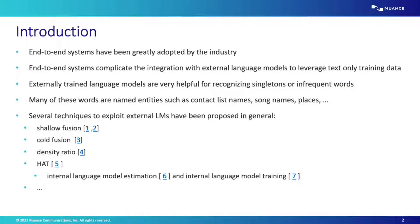End-to-end systems have been really adopted by the industry and academia, but they complicate the integration with standard language models. Standard language models are typically used to leverage text-only training data, and they are extremely helpful when recognizing singletons or infrequent words and phrases. Many of those words and phrases are named entities such as contact names, song names, or places. In the literature, there have been several proposals to exploit external language models, such as shallow fusion, cold fusion, the situation, HAT, internal language model estimation, and internal language model training.